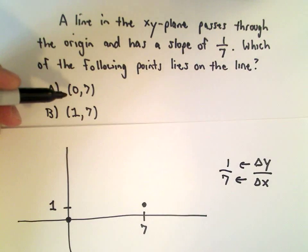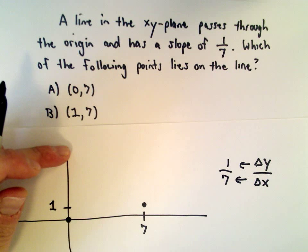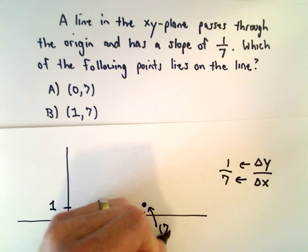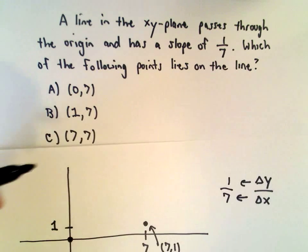Let's see - (0,7) would be up here on the y-axis, that's definitely not correct. (1,7), well let's be careful because this is the point (7,1). (1,7) would be up here somewhere, so it's not answer choice B. (7,7) would be up here, so that's not right.